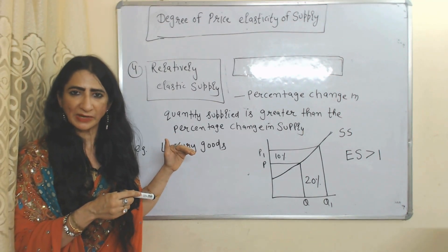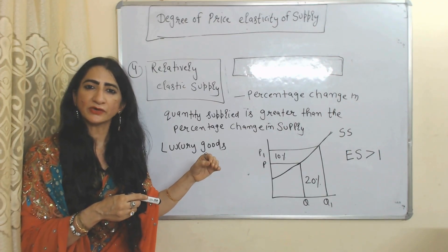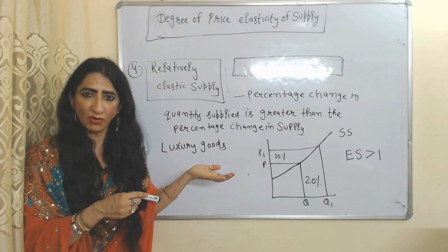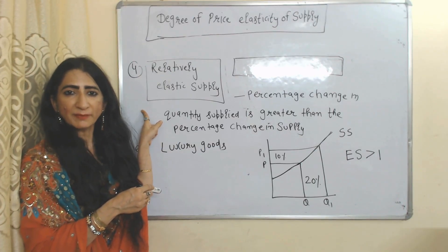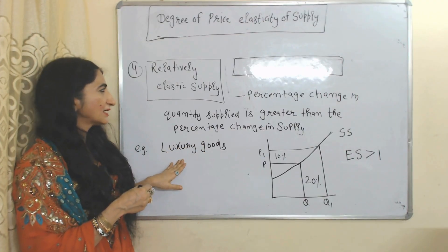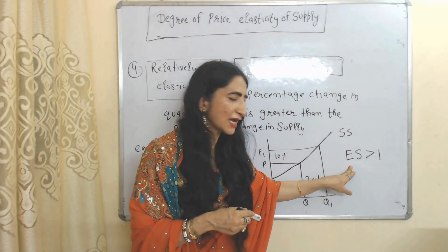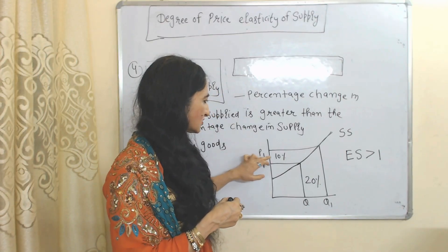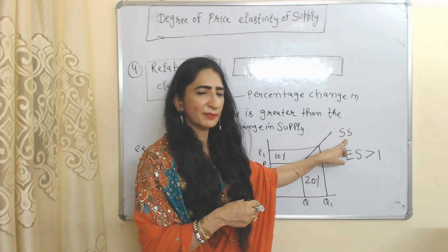Now we will see relatively elastic supply, which means the change in supply is more than the change in price. When quantity supplied changes more than the change in price, it is called relatively elastic supply. For example, price changes by 10 percent but supply changes by 20 percent. Relatively elastic supply is possible in the case of luxury goods, and elasticity of supply is greater than one. In the diagram, price increases 10 percent but supply increases 20 percent, with SS as the supply curve.